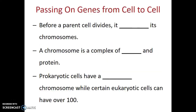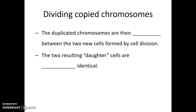Before a parent cell divides, it copies its chromosomes. A chromosome is a complex of DNA and protein — the DNA holds the information and the protein is there as a support structure or scaffold for that DNA. Prokaryotic cells have a single chromosome, whereas certain eukaryotic cells can have over 100 chromosomes in each cell. If a cell is going to divide, it must copy its DNA and its chromosomes. The duplicated chromosomes are then divided between the two new cells formed by cell division, and the resulting daughter cells are going to be genetically identical.